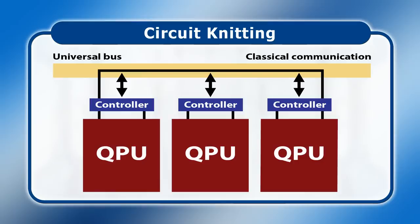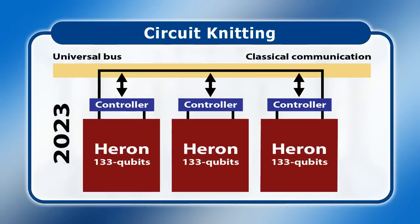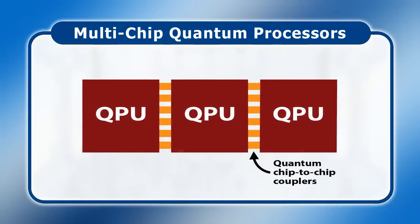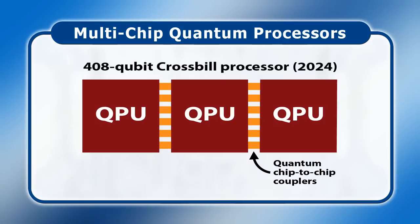To achieve circuit knitting, in 2023 a 133-qubit processor called Heron will be released. This will feature control hardware to allow real-time classical communication between separate processors, so facilitating multi-threaded parallel quantum processing. IBM's second scaling method is to build multi-chip quantum processors. Here two qubits called chip-to-chip couplers will connect different quantum chips together. This innovation is slated for delivery in 2024 in a 408-qubit processor called Crossbill, which will internally link together three smaller chips to function like one larger quantum processor.